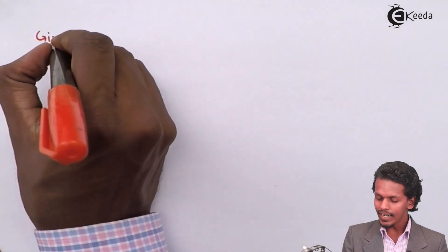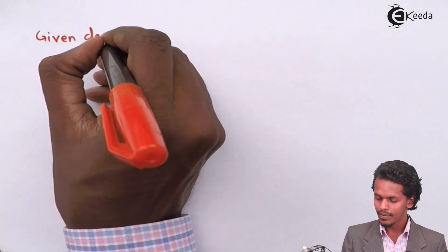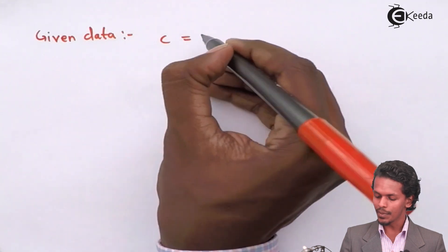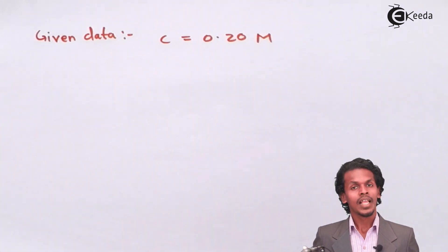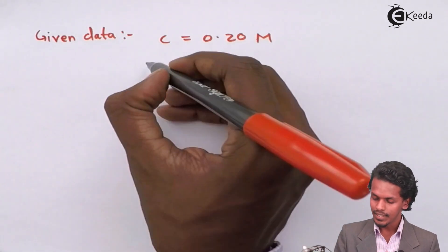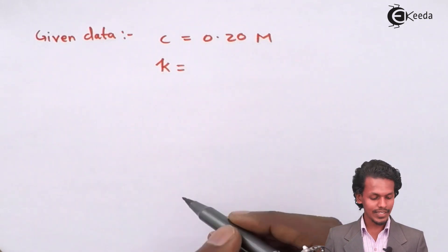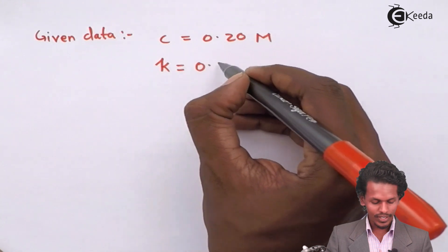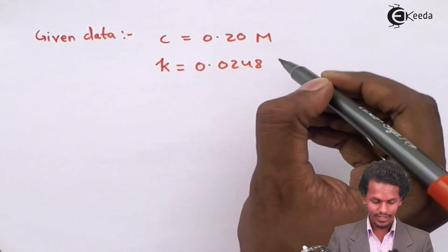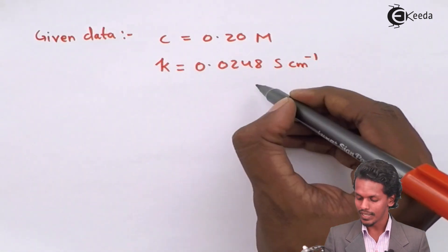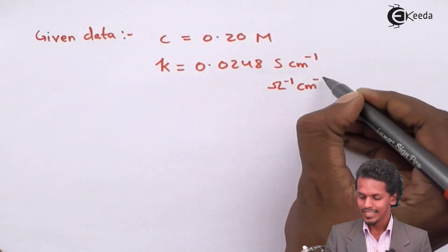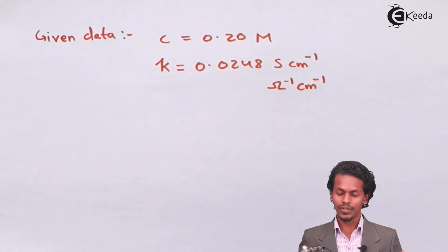The given data says that the concentration is 0.20 molar, while the conductivity K is given as 0.0248 Siemens per centimeter, which can also be written as ohm inverse centimeter inverse.